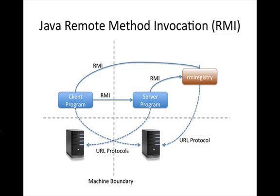Java Remote Method Invocation, or Java RMI, lets us distribute Java object instances across the network on different machines and invoke them from our local machine in a way that's semantically equivalent to invoking a Java object instance within our own local address space. In this tutorial we're going to go over the basics of using Java RMI to remote part of a Java program across the network.